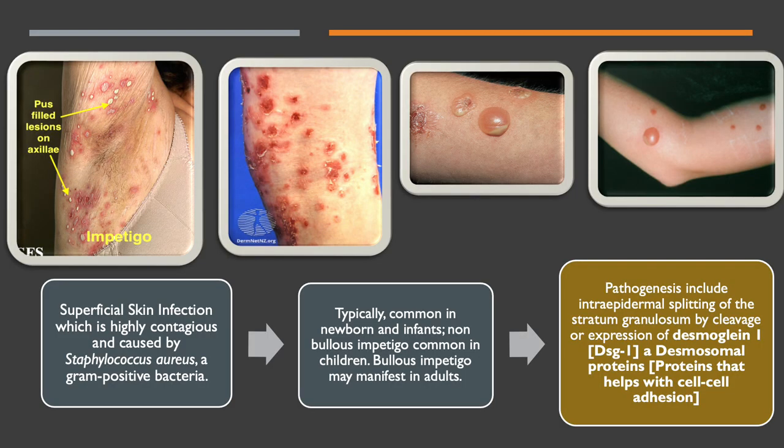Bullous Impetigo is a superficial skin infection which is highly contagious and caused by Staphylococcus aureus, a gram-positive bacteria. It is typically common in newborns and infants. Non-Bullous Impetigo is common in children, and Bullous Impetigo may manifest in adults.